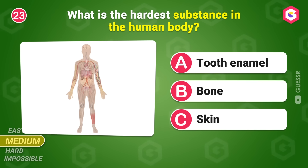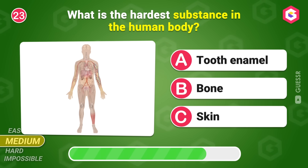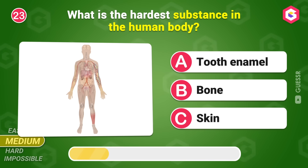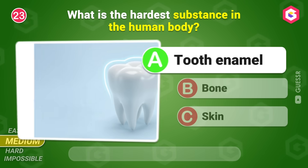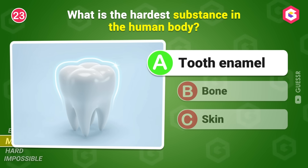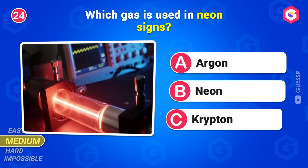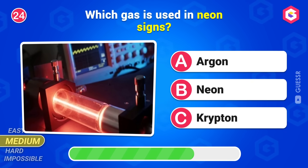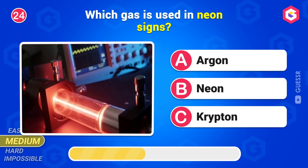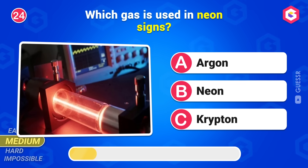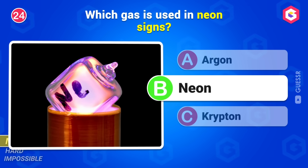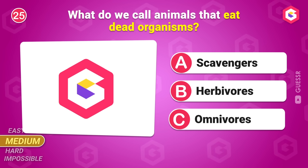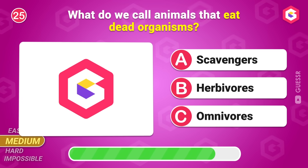What is the hardest substance in the human body? Tooth enamel. Which gas is used in neon signs? Neon. What do we call animals that eat dead organisms? Decomposers.